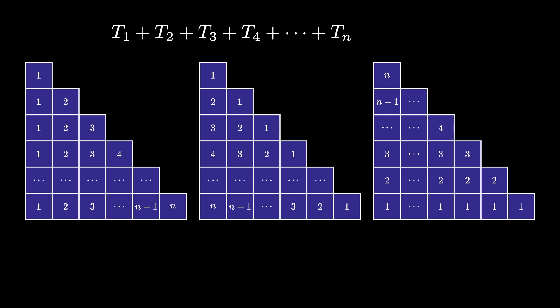So the total number of tokens spread across these 3 triangular arrays is 3 times the sum of the first n triangular numbers.